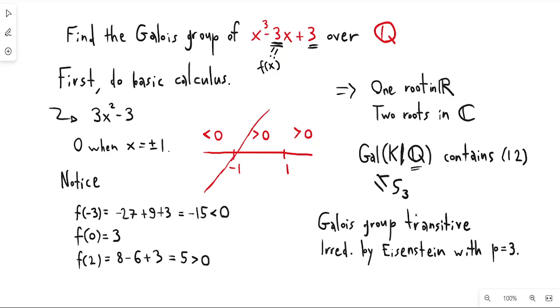So I know that this is a transitive subgroup of S3. Because it's transitive, it contains a permutation of the roots. It doesn't have to be this specific cycle - it just depends on how you number the roots. But it contains at least one 3-cycle and it contains at least one 2-cycle.